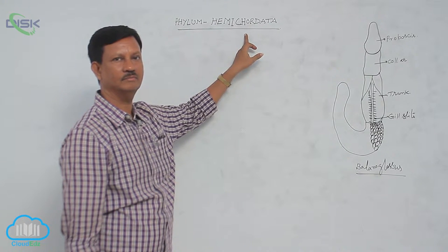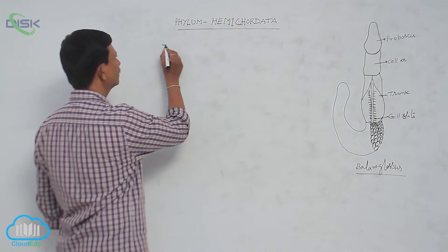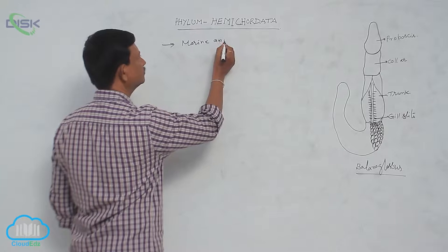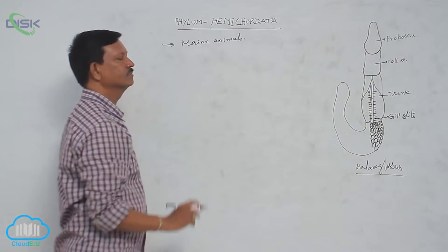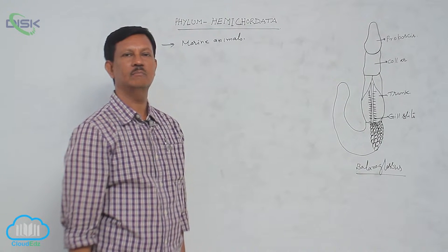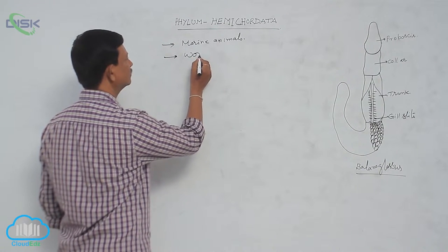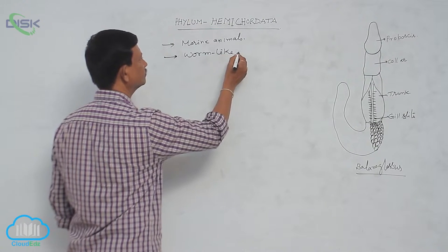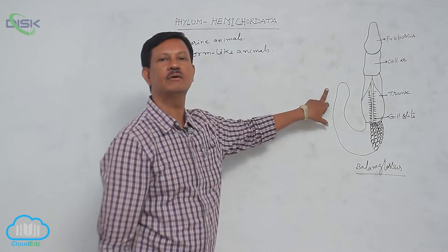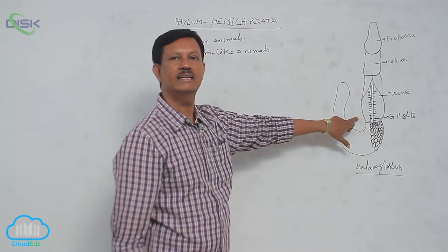The main characters of the hemichordates: these are marine animals, all found in marine water. They are worm-like animals. As you can see in the diagram, the hemichordate body is elongated and cylindrical, resembling worms.